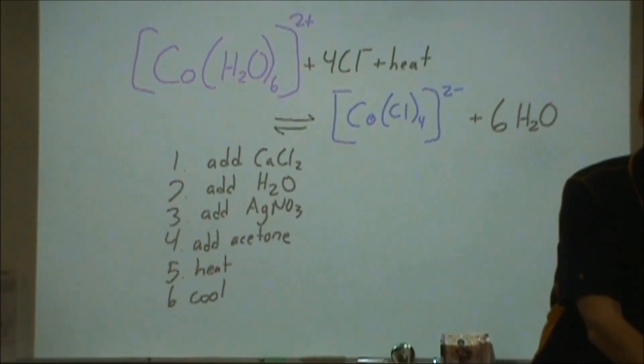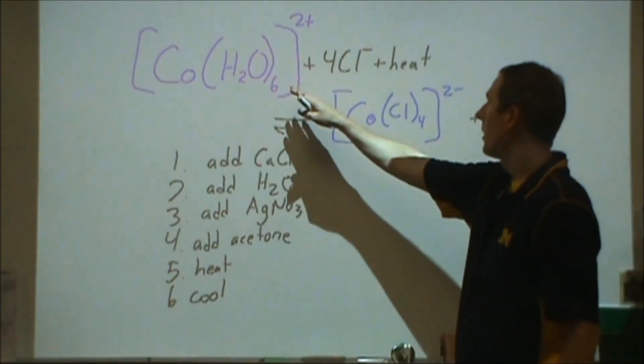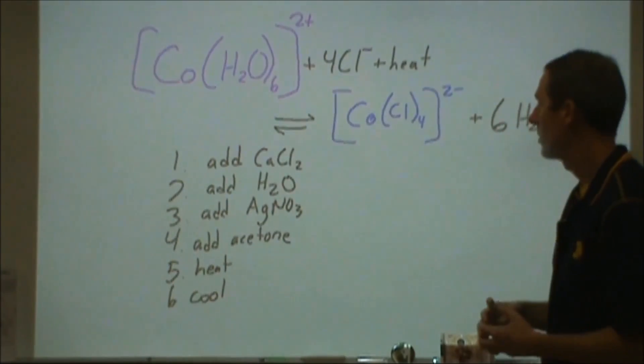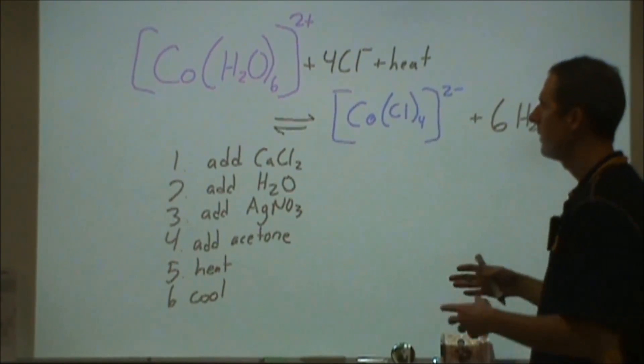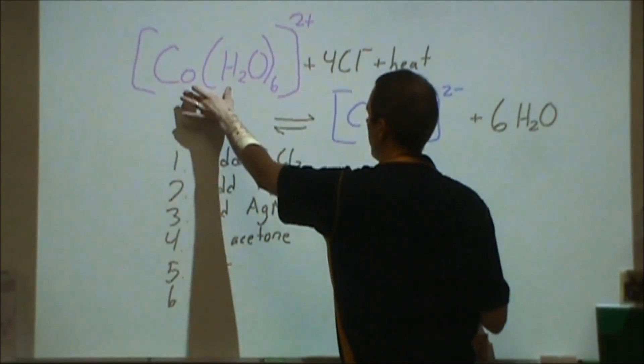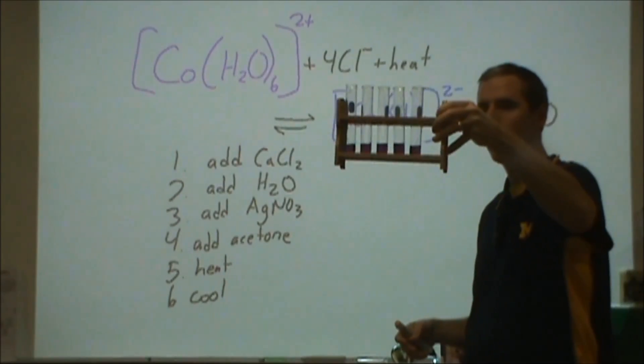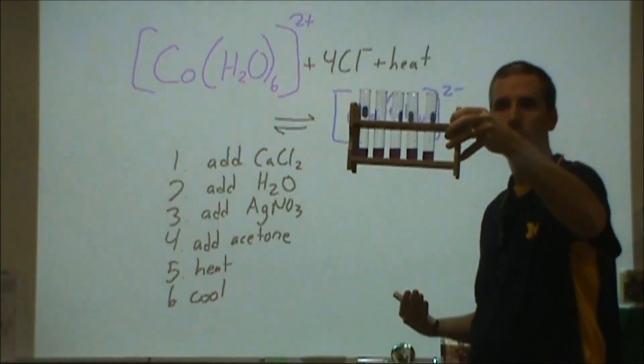So one of these complexes is a pink color when it's surrounded by water as the ligand, and when it's surrounded by chloride ions the ligand actually turns blue. What I have here is an equilibrium mixture where I actually have both of these present in appreciable quantities, and so instead of a pink or a blue color you're looking at a kind of purplish color.